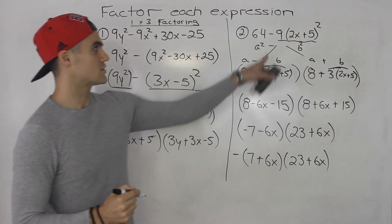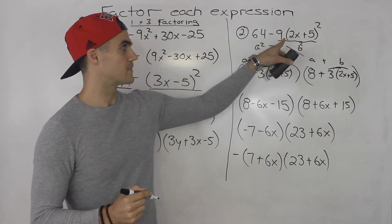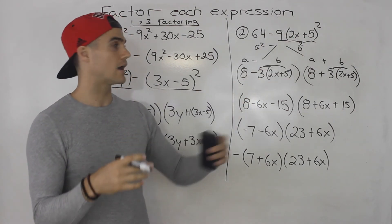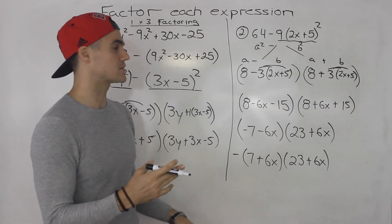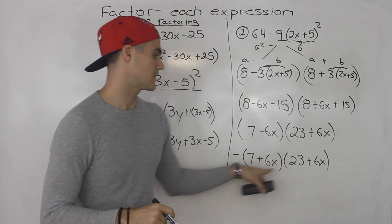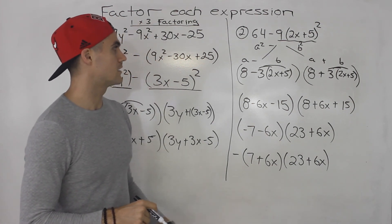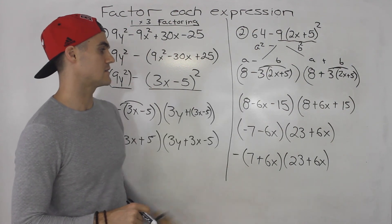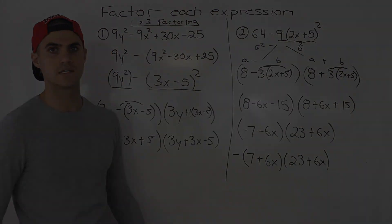Another thing you could have done is you could have expanded all of this. So 2x plus 5 times 2x plus 5, foil it out. Distribute that negative 9 in, simplify all the like terms. You would end up with a trinomial. Then you could factor the trinomial into this. But if you could recognize that this is a difference of squares, I feel like these steps are a lot easier.